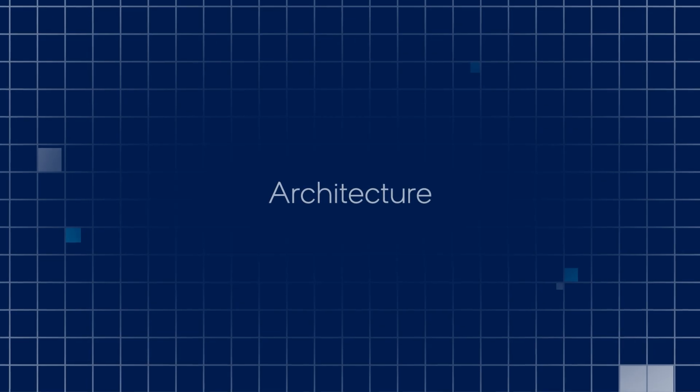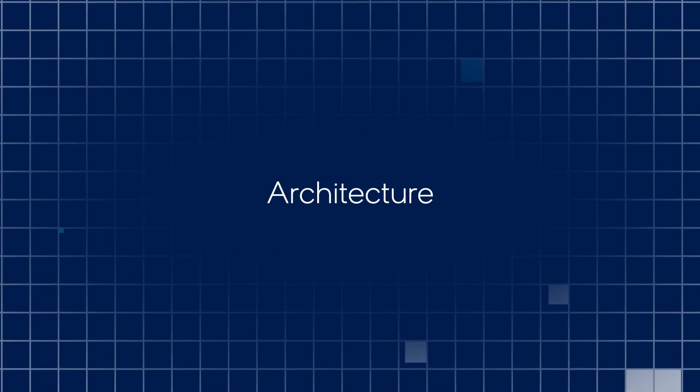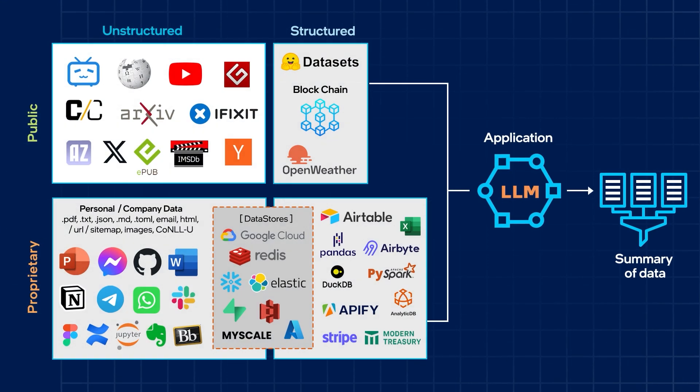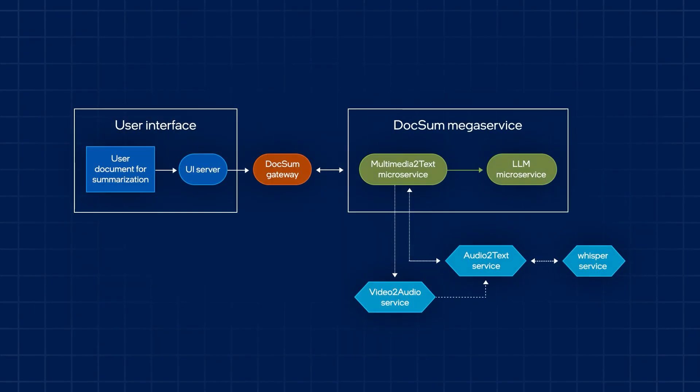In terms of general architecture, this application uses Langchain to implement content summarization. It also facilitates large language model inferencing using text generation inference, or TGI, to enable high performance text generation for serving and deployment. This flowchart shows the information flow between different microservices for this application.